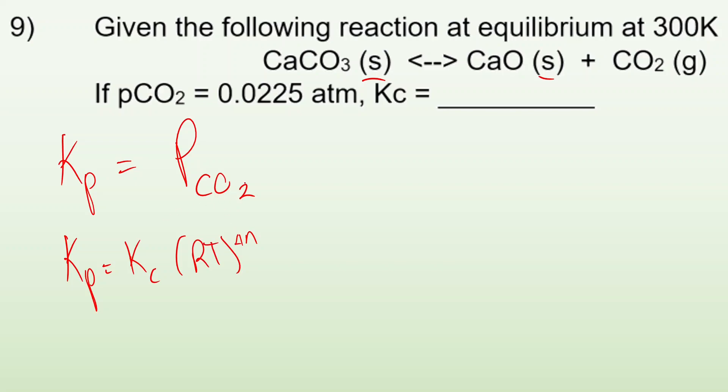So my Kp is just this 0.0225, and I'm trying to solve for Kc. So if I rearrange it, I get my Kc equals Kp divided by RT to the delta n. The delta n is how the number of gases have changed on the left side versus the right side. So on the left side, I have no gases, but on the right side, I have one. So my delta n is equal to one.